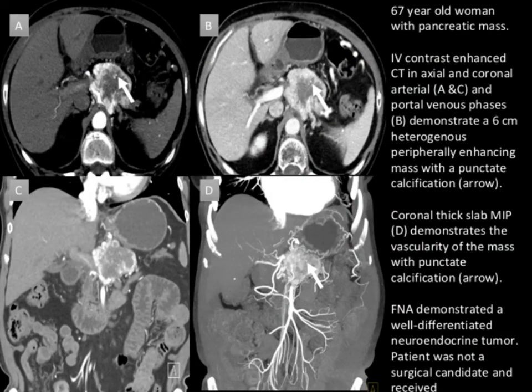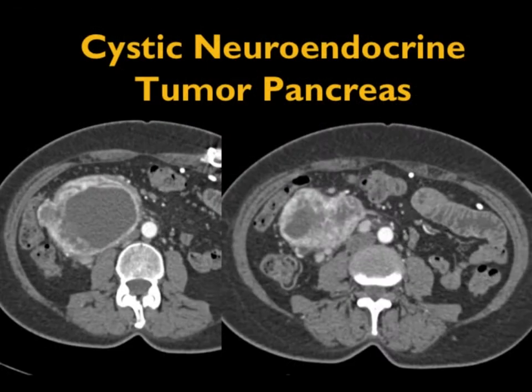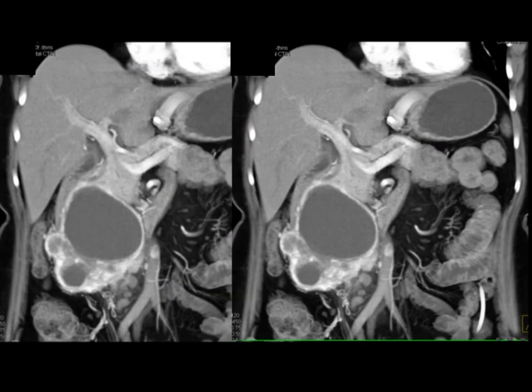Here are case examples showing calcifications in the head of the pancreas in one patient and in the tail in another — both had neuroendocrine tumors. Here's another example showing calcifications that can be very large or very small. And here's a lesion with minimal calcification — cystic and solid and hypervascular — that was a neuroendocrine tumor in the head of the pancreas.